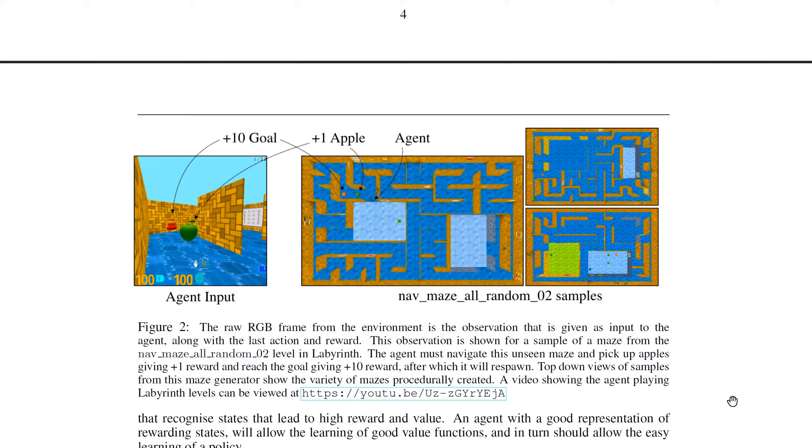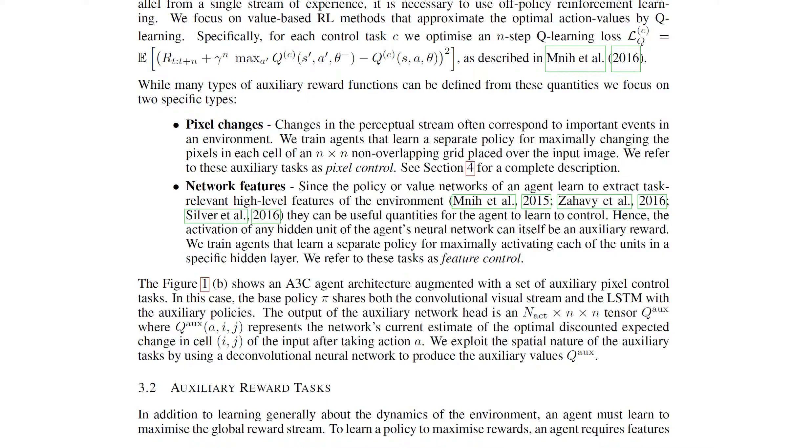Especially they considered these two auxiliary control tasks. Pixel changes, which means that the agent actually tries to actively change pixels. It gets a reward for changing the pixels in the input. So it tries to maximize this. It needs to learn what do I need to do to maximize my pixel changes, and probably that will be moving around.